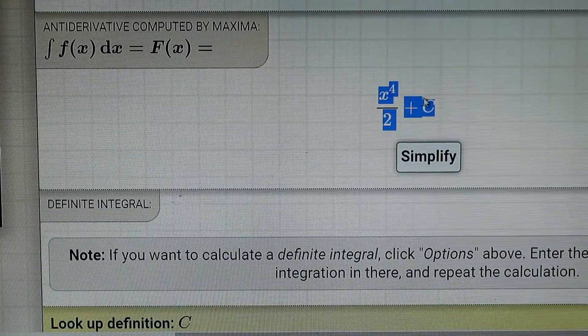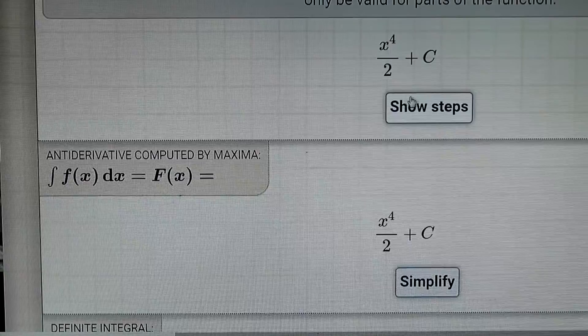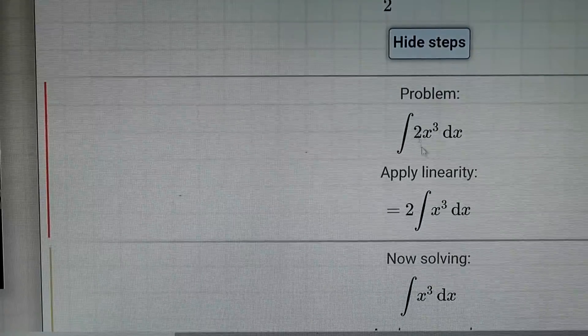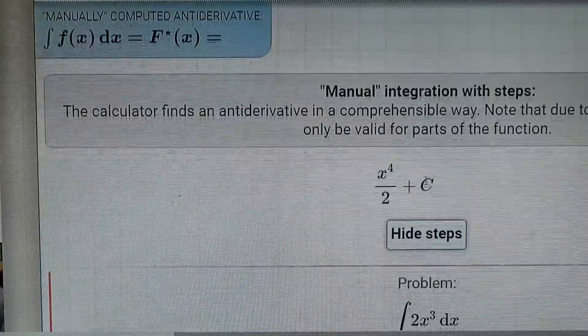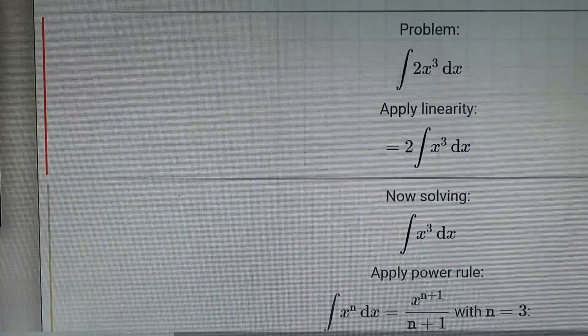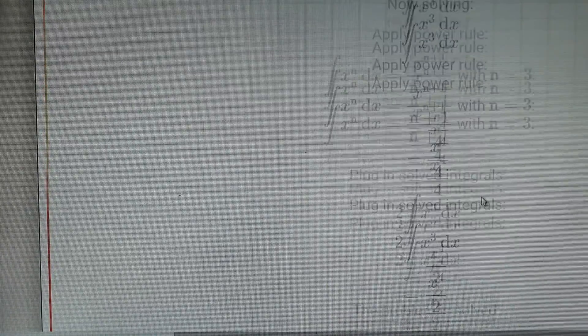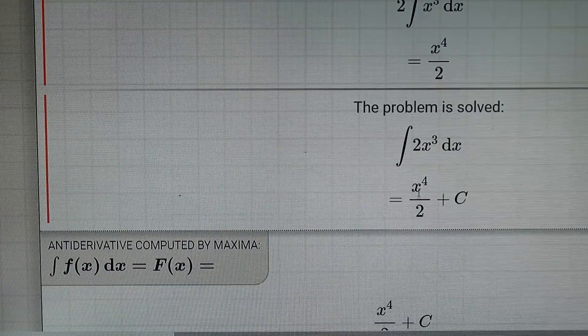And right here is the final answer. It even has the plus c for the indefinite integral. And if we hit show steps, it shows us the exact steps followed. I hit x cubed plus x cubed. So here it combined it to 2x cubed and then pulled the 2 outside the integral and then integrated from there and ended up with the final answer, half x to the fourth plus c.